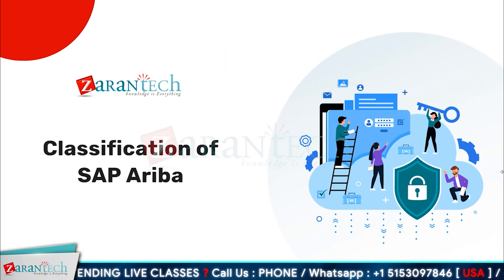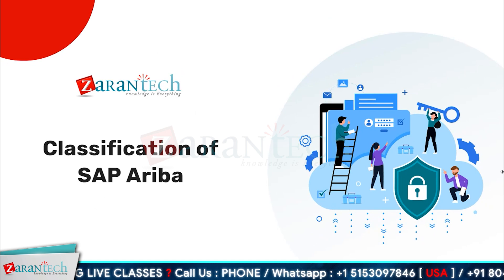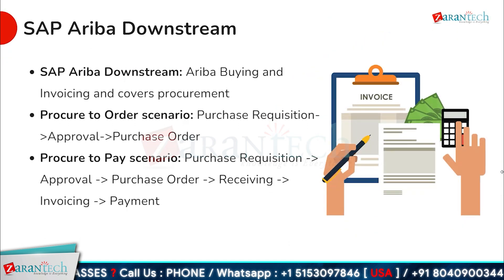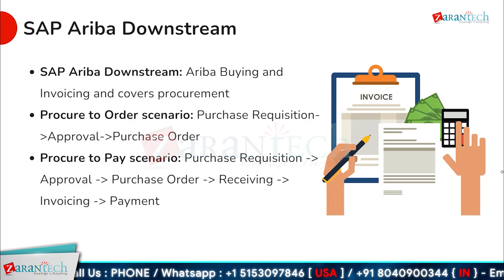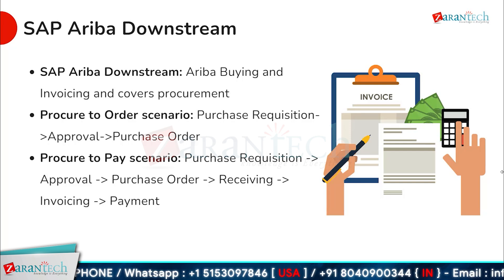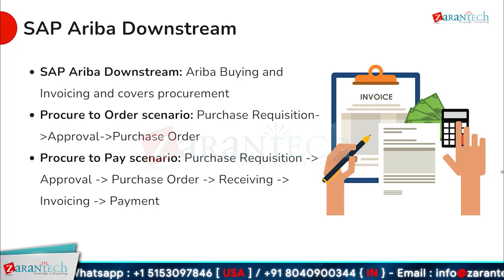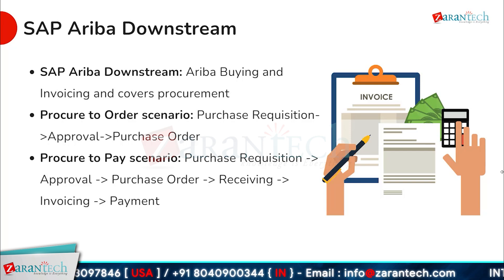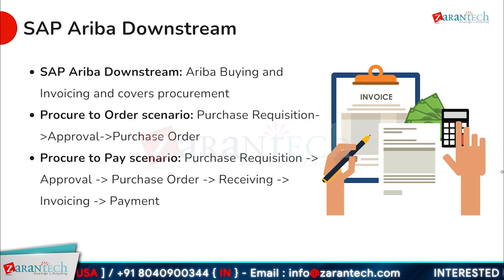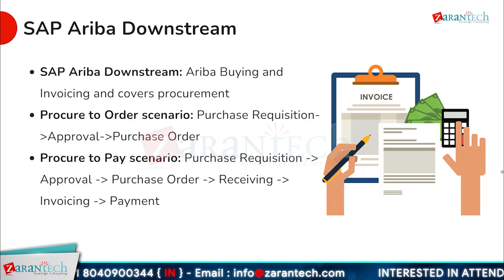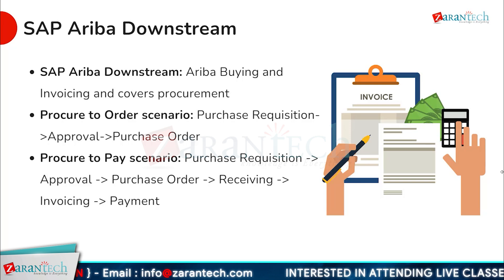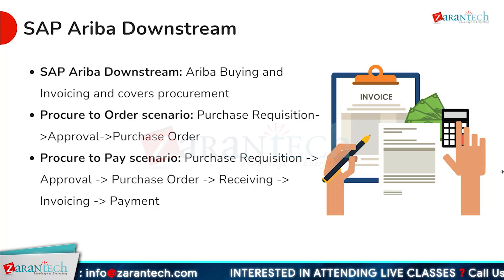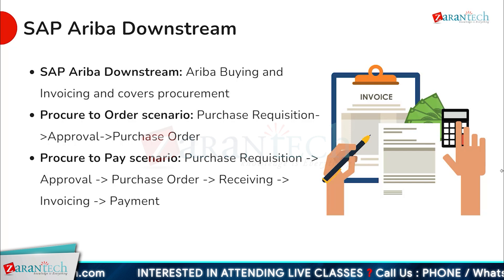SAP Ariba downstream includes the Ariba Buying and Invoicing module, which covers the procurement processes. The procure-to-order scenario involves creating a purchase requisition, obtaining approval, and generating a purchase order. The procure-to-pay scenario extends this process to include receiving goods or services, invoicing, and payment. SAP Ariba downstream streamlines these processes, automating tasks and reducing manual effort.